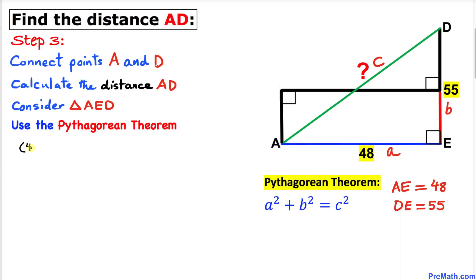In our case, a is 48, so it's going to become 48 squared plus b, which in our case is 55 squared, equal to c squared. Now let's take care of this equation. Let's simplify: 48 squared is 2304.